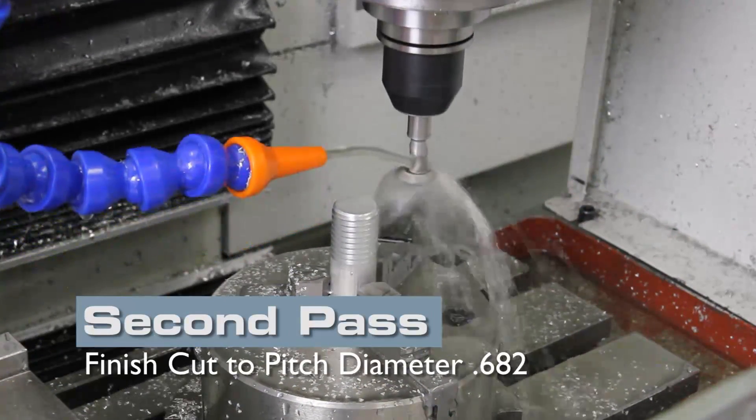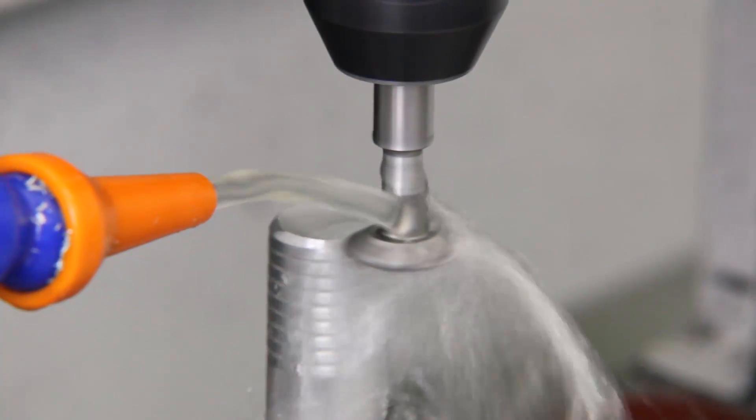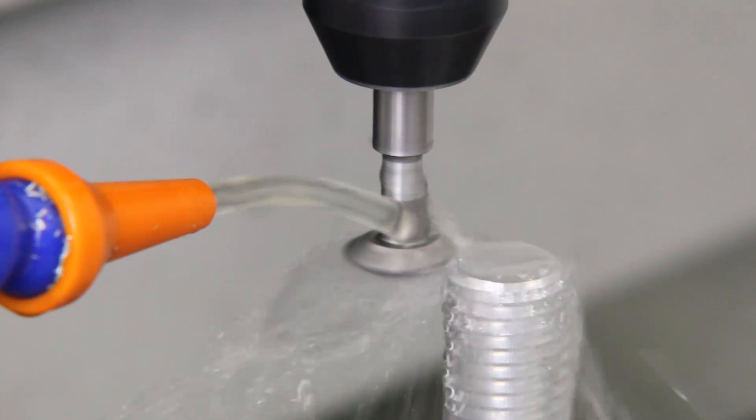The second pass is programmed to cut to the final pitch diameter of 682 thou. This is followed again by a third, final skim pass at 682 thou to clean up the threads.